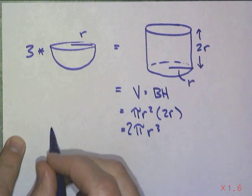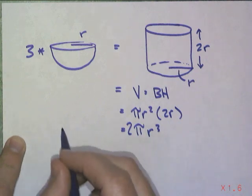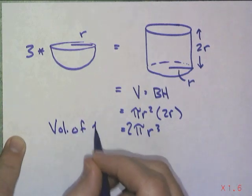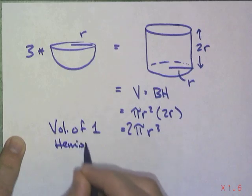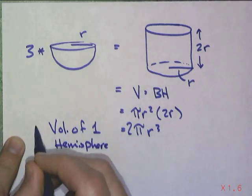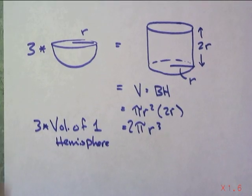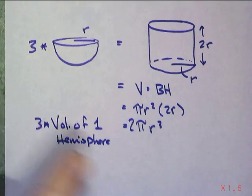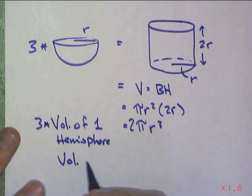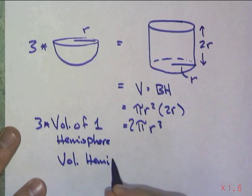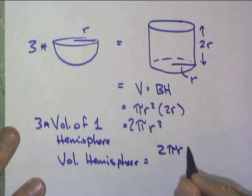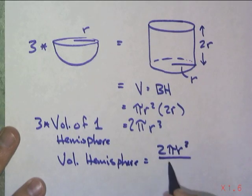So if we want the volume of one hemisphere, that would be... I wrote this out. It was three times... I'll get my algebra correctly. Three times the volume of one hemisphere is equal to two pi r cubed. Therefore, the volume of one hemisphere is equal to two pi r cubed divided by three.